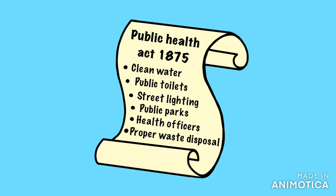The 1875 Public Health Act: City authorities had to provide clean water to stop diseases spreading from dirty water; sewers to dispose of waste properly; public toilets; street lighting; public parks for exercise; and public health officers were to inspect lodging houses, the building of new homes, and the quality of food sold.